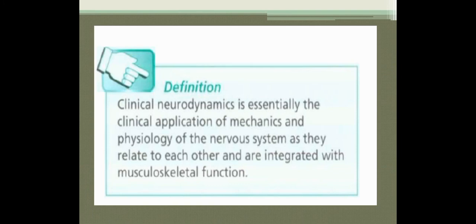So what is the definition of neurodynamics? Clinical neurodynamics is essentially the clinical application of mechanics and physiology of the nervous system as they relate to each other and are integrated with musculoskeletal function. In clinical neurodynamics, we treat the patient by mobilization of the nerves, taking into consideration the principles of mechanics and the normal physiology of the nervous system, because these systems are interconnected and interlinked.